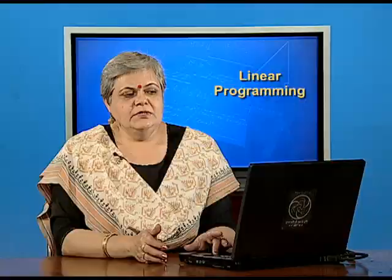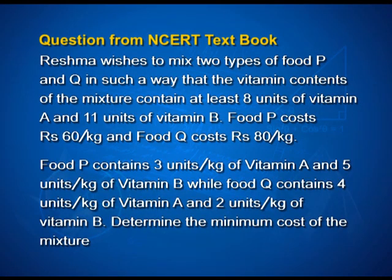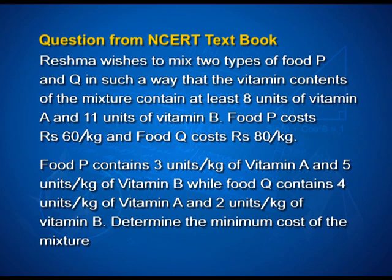This is a diet problem where we are looking at two types of foods P and Q. Our decision variables will be related to how much we use of food P and food Q respectively. We need to minimize the cost, and the cost per kg of food P and Q are both known. The constraints we build will be based on the idea that the new mixture must contain at least 8 units of vitamin A and 11 units of vitamin B.